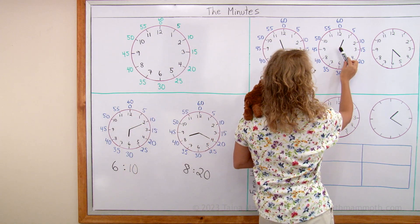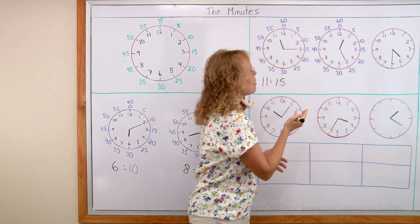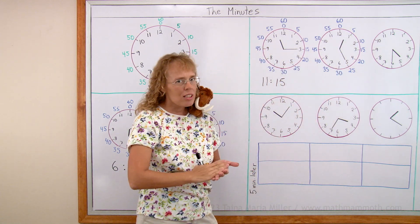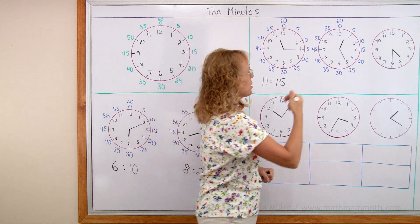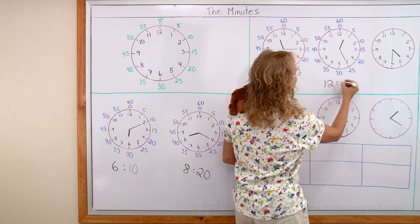Over here. Hour hand? Points over there between 12 and 1. But you still need to write it as 12 hours. And minute hand? Over here. 25.